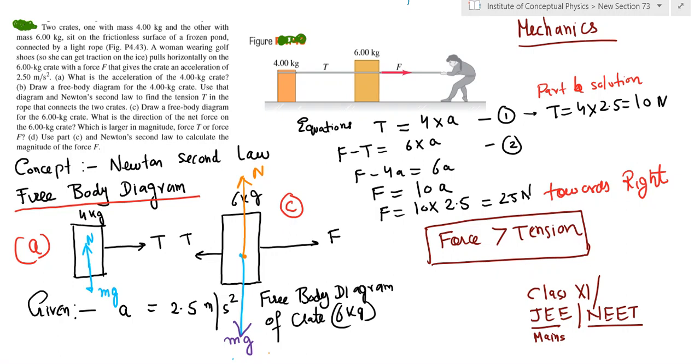Good morning, let's discuss this problem. You can see there are two blocks and a person which is pulling the blocks. There is a string connected to the 6 kg block and the 4 kg block. The man is trying to pull both the 4 kg and 6 kg block towards the right hand side.